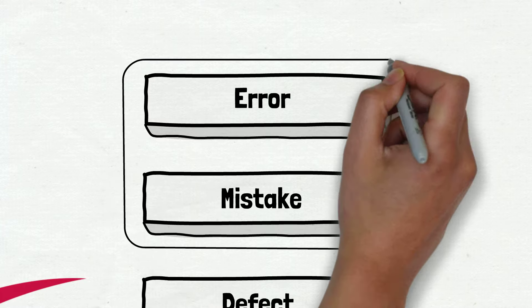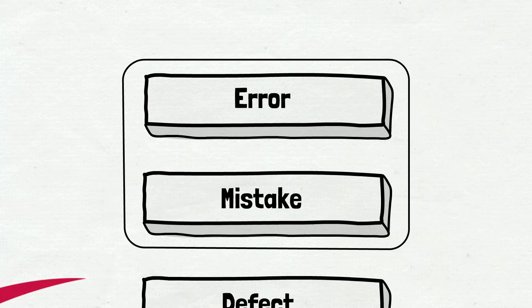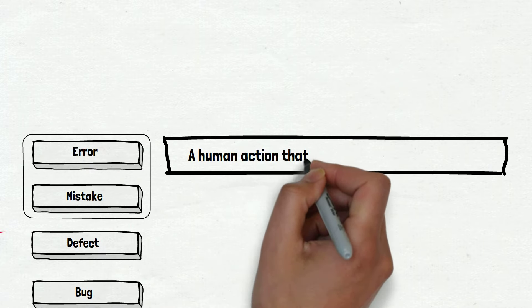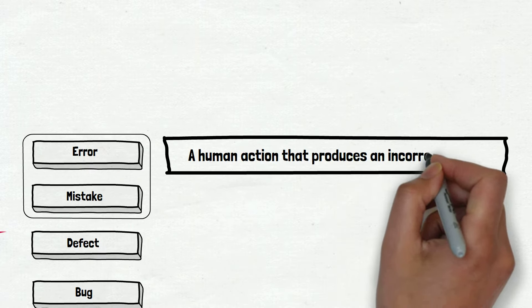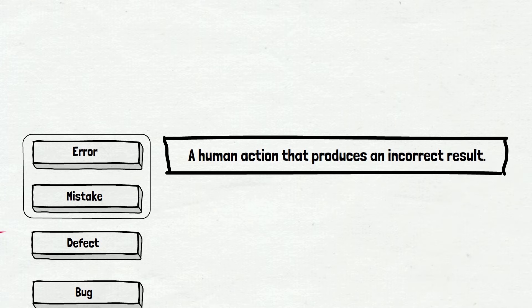The error and mistake are synonymous. The definition is the same for both. Error is a human action that produces an incorrect result. We won't dive deep into ISTQB theory for now. Let's get familiar with the definitions first.